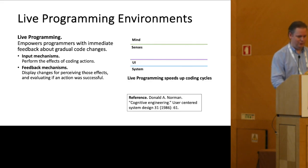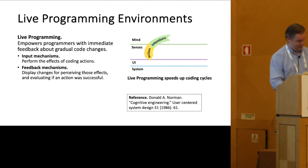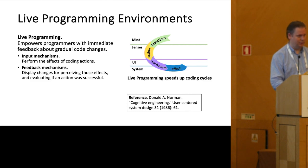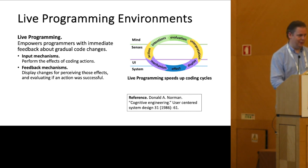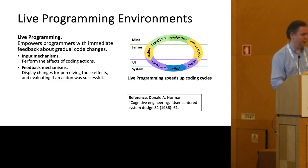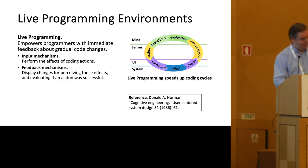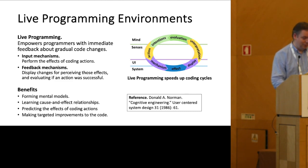Let's go to the coding cycle. It starts with intentions. The programmer performs actions via some input mechanisms. This has an effect, which is quantified, and then it is displayed in some meaningful manner. You can interpret it and then evaluate it. If you're not a very experienced programmer yet, you discover that you haven't achieved your goal. Experienced programmers have amazing mental models and predict many things correctly, but even experienced programmers do make mistakes.